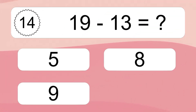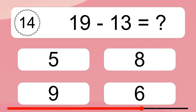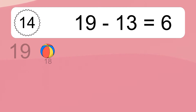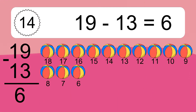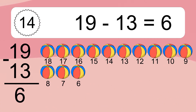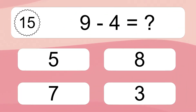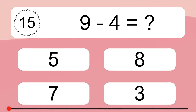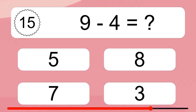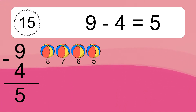19 minus 13 equals what? 19 minus 13 equals 6. Let's count it. 18, 17, 16, 15, 14, 13, 12, 11, 10, 9, 8, 7, 6. 9 minus 4 equals what? 9 minus 4 equals 5. Let's count it. 8, 7, 6, 5.